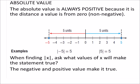Absolute values. Absolute values are always positive because we're talking about the distance we are from zero or a value is from zero.